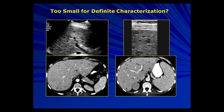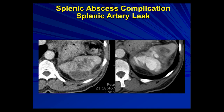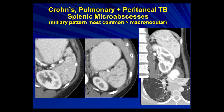An example of splenic abscesses on the arterial phase shows enhancement leaking from the splenic artery into the abscess. Here again, a micro-abscess pattern in a normal-size spleen in a patient with known Crohn's and known pulmonary TB — this is spread from pulmonary TB to the spleen with multiple splenic micro-abscesses in a small miliary pattern.